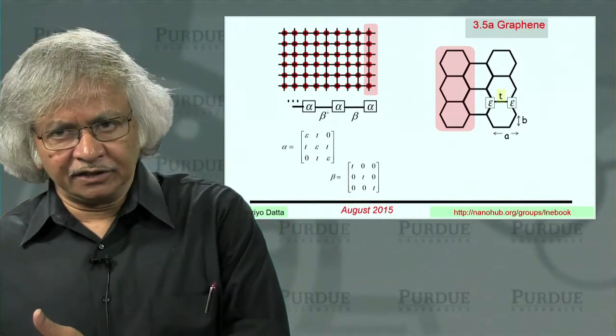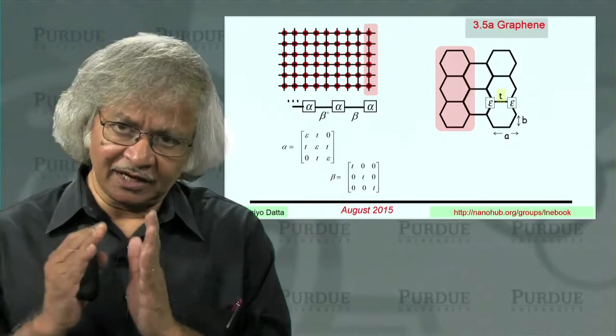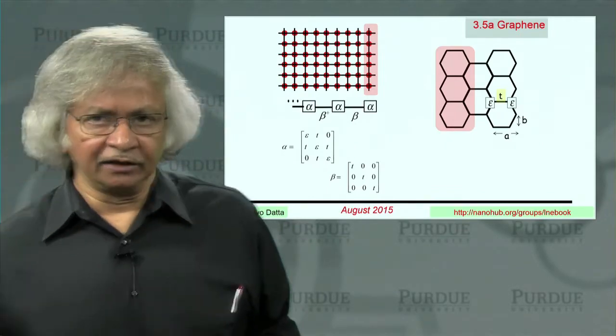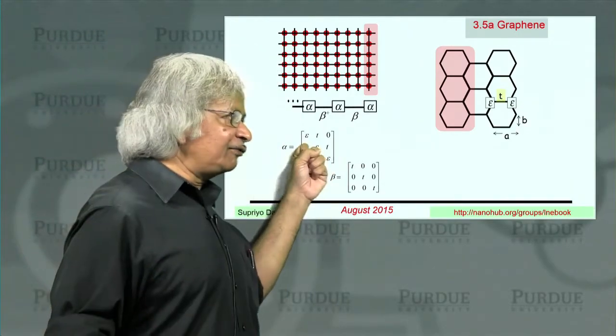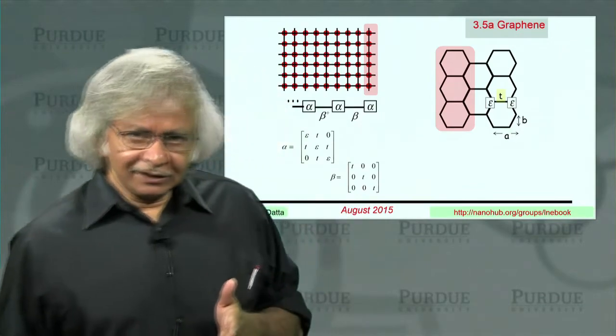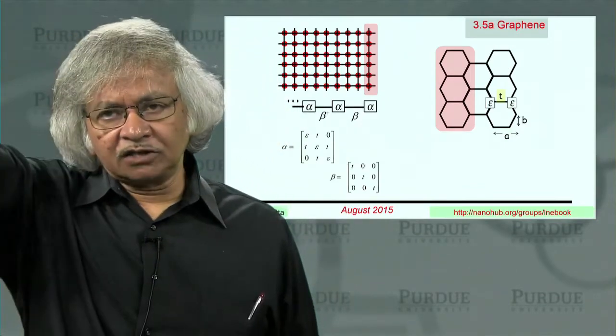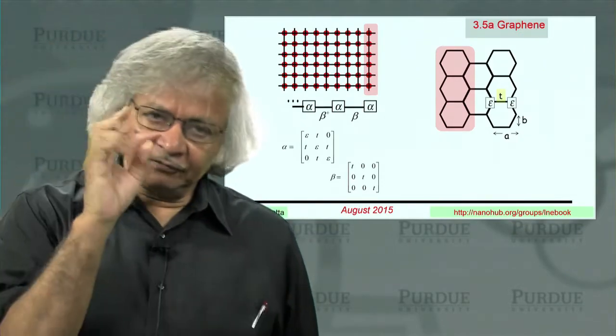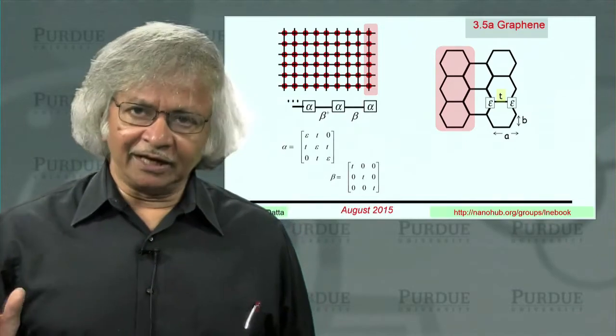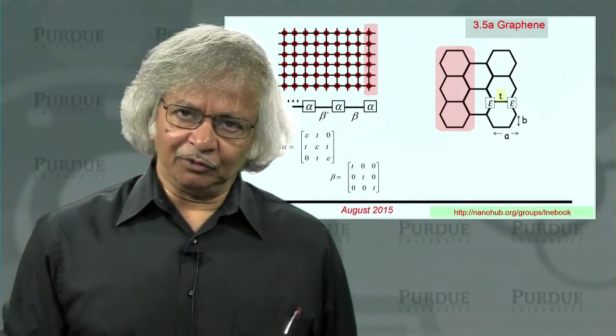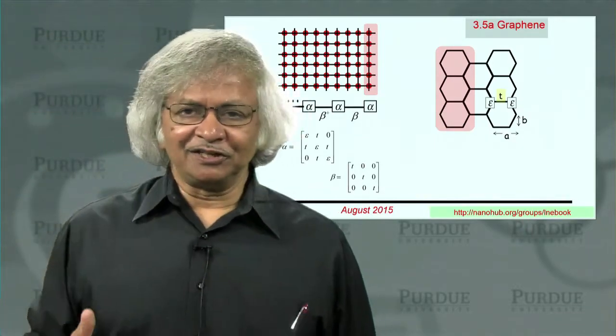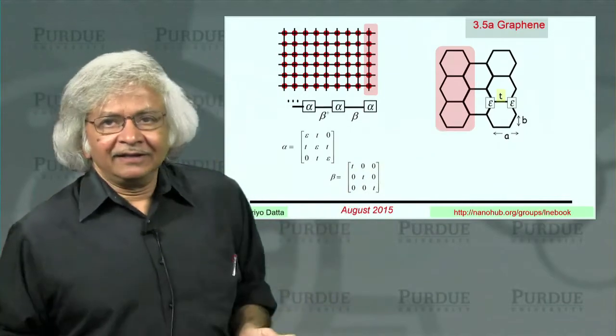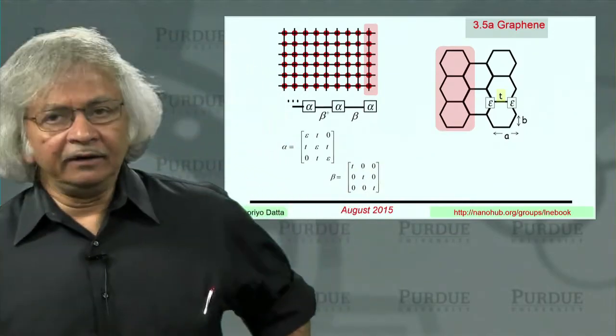And if alpha and beta are both diagonal, then you can visualize the problem as lots of 1D problems in parallel because they're both diagonal. But if one of them is not diagonal, then you don't have that luxury anymore. Then all these different chains get connected up. So for graphene, that's why you couldn't really use the method we had in Lecture 2.